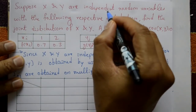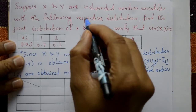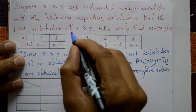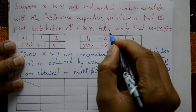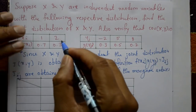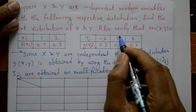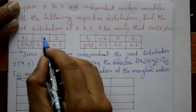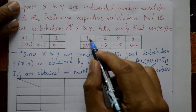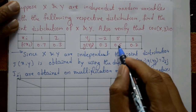Suppose X and Y are independent random variables with the following respective distributions. Find the joint distribution of X and Y, and also verify that the covariance of X and Y equals 0. The distribution of X has values 1 and 2 with f(x) values 0.7 and 0.3. The distribution of Y has values minus 2, 5, and 8 with g(y) values 0.3, 0.5, and 0.2.